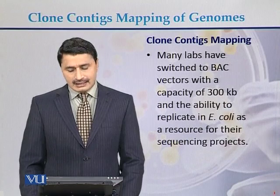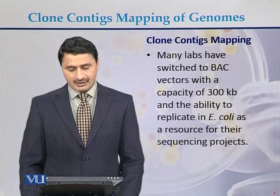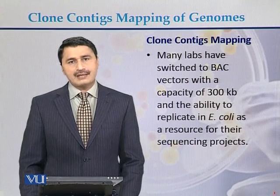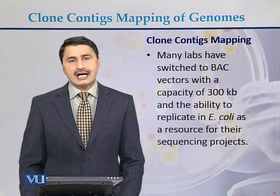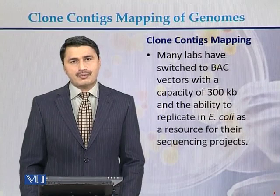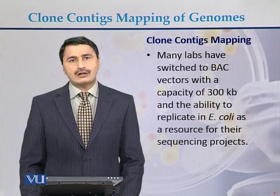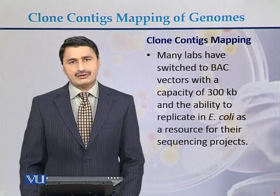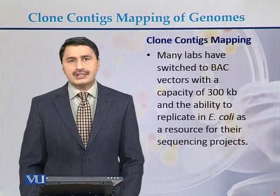Due to this problem, many labs have switched to bacterial artificial chromosome vectors, which have a capacity of 300 KB, can replicate in E. coli, and serve as a source for sequencing. Most labs switched from YACs to BACs because the cloning capacity of the bacterial artificial chromosome is approximately 200 KB up to 300 KB, while the cloning capacity of yeast artificial chromosomes can be up to 1 MB. Because the cloning capacity is larger in YACs, those vectors can take in more than one fragment of the chromosome, which created complications while genomic mapping of the human chromosome.